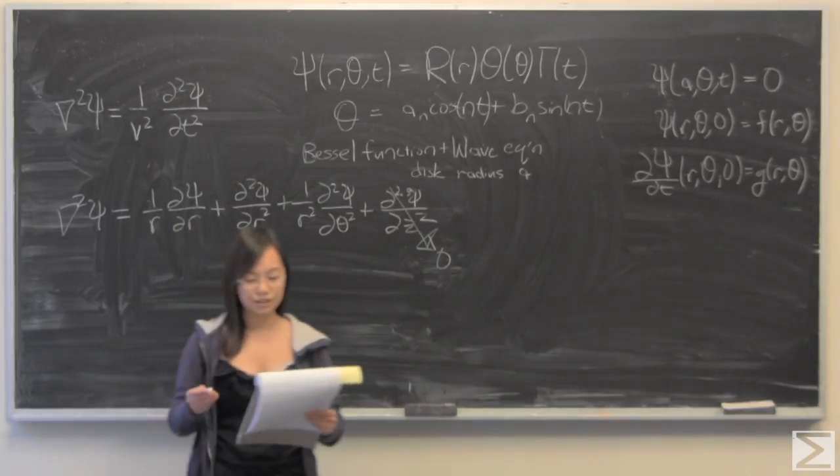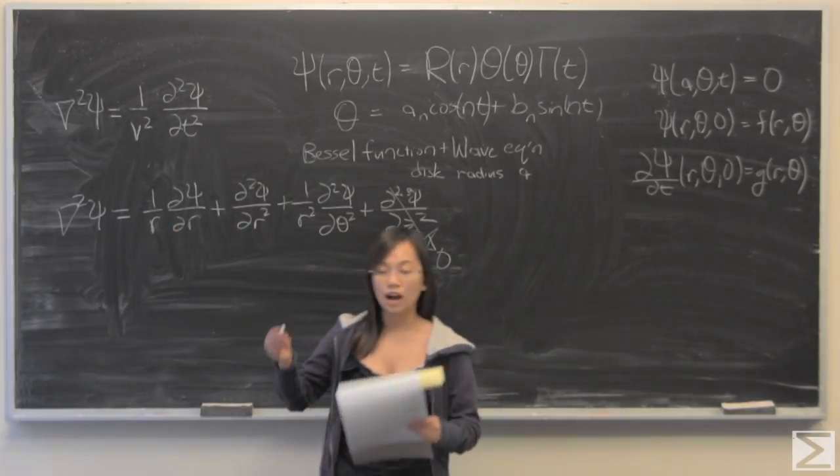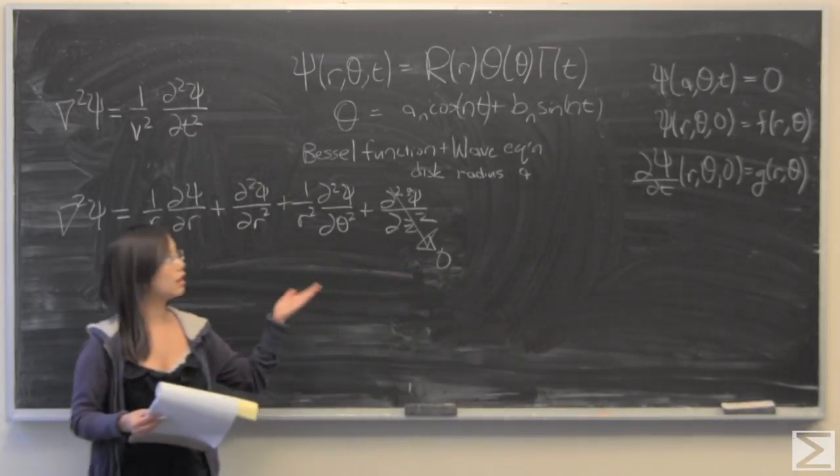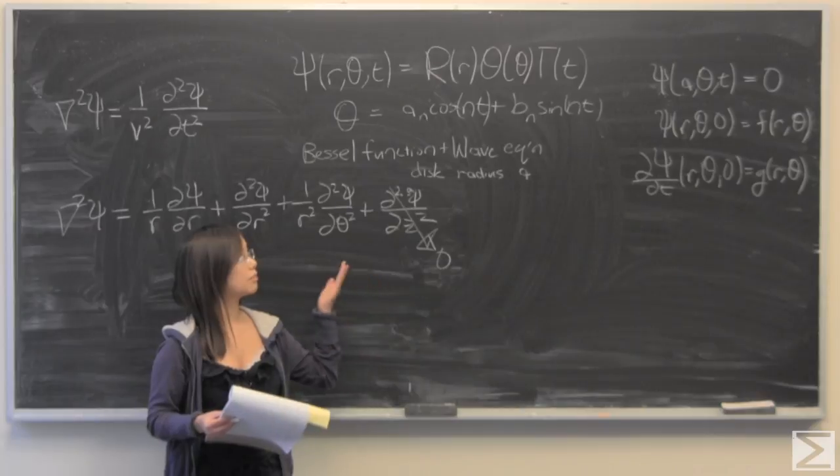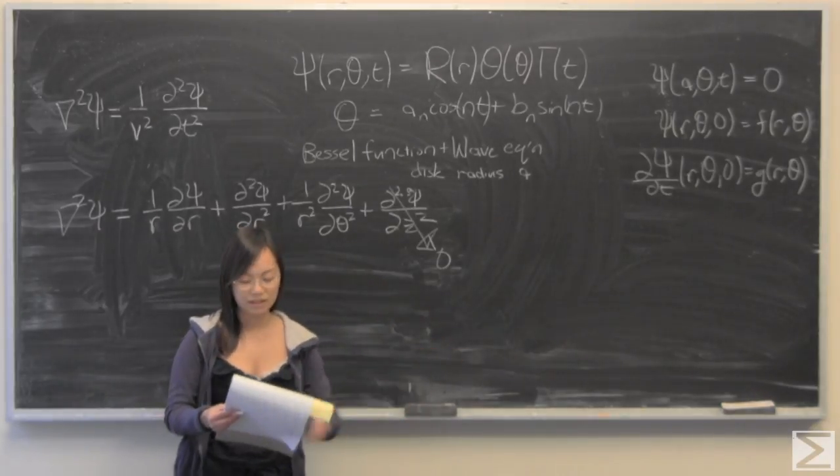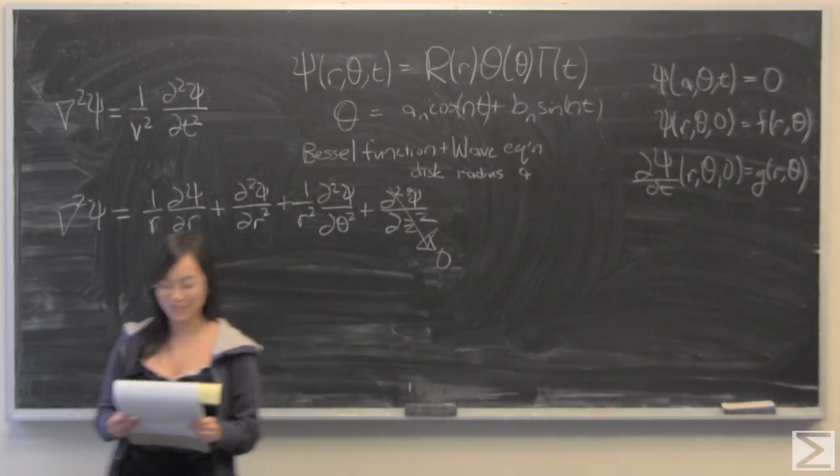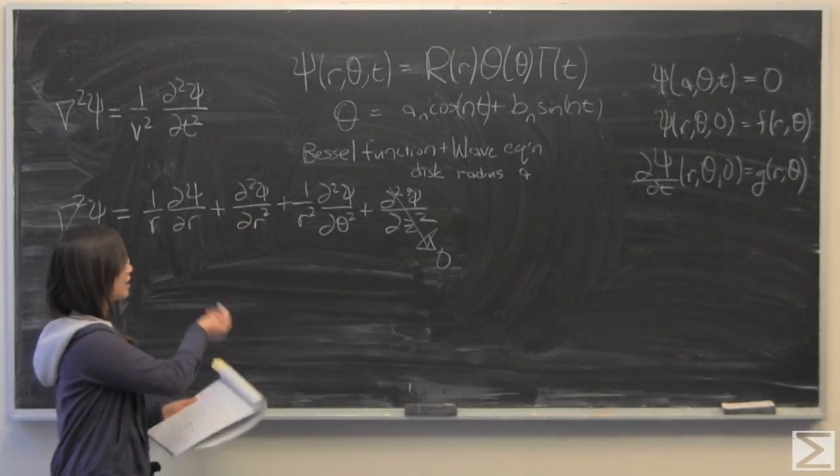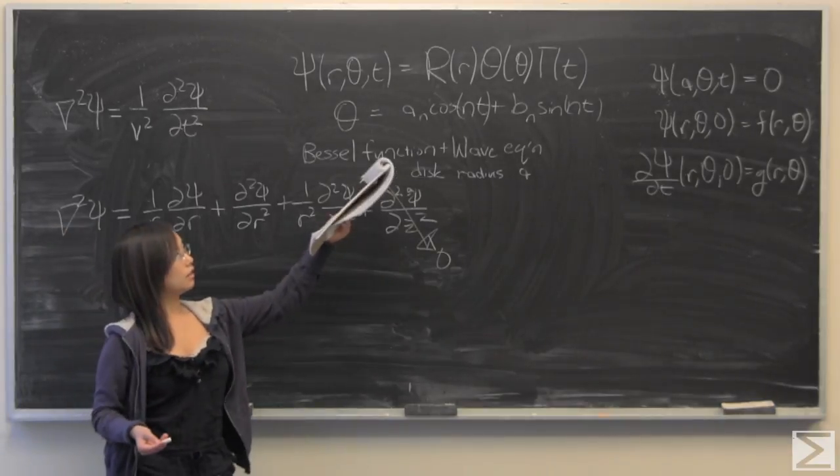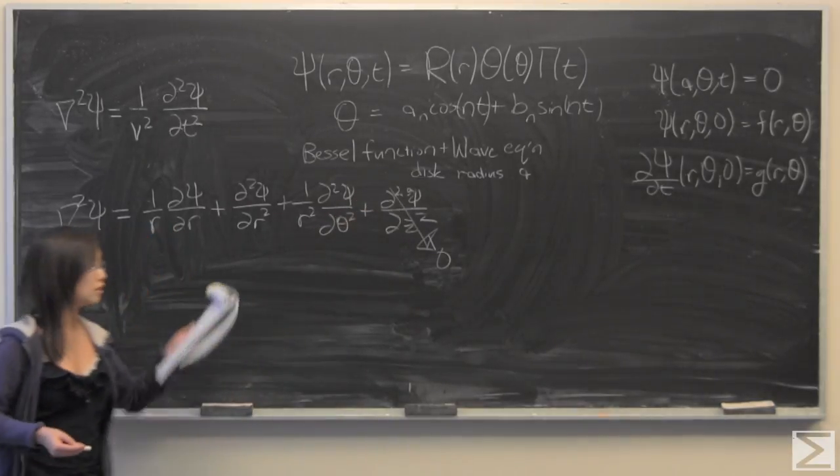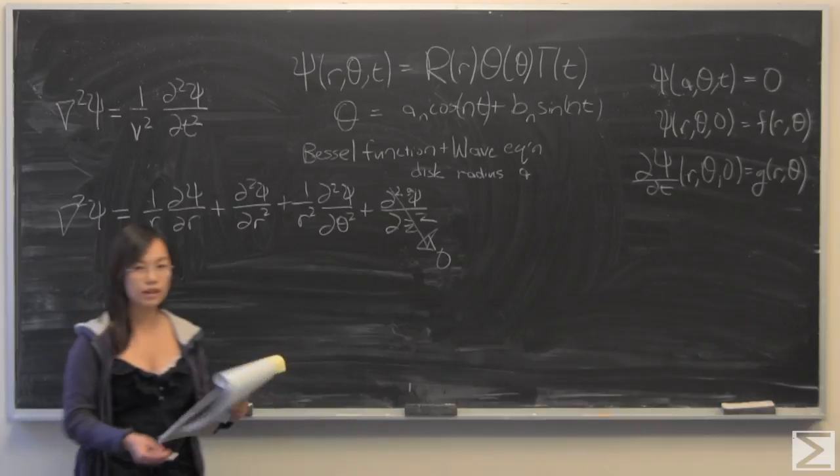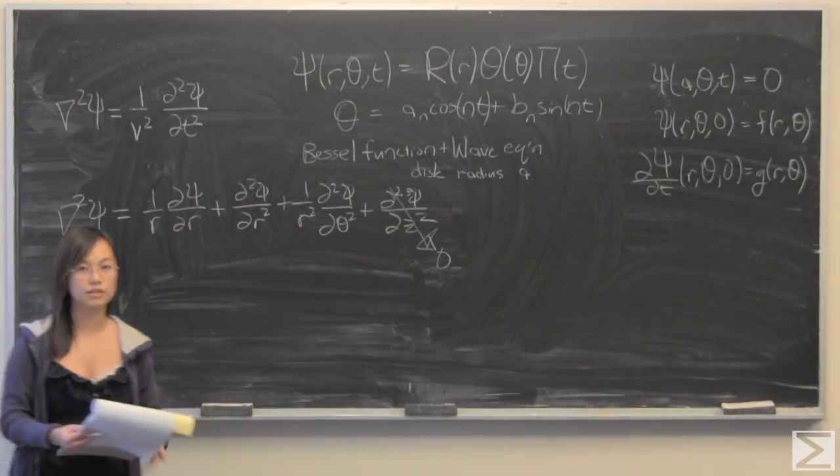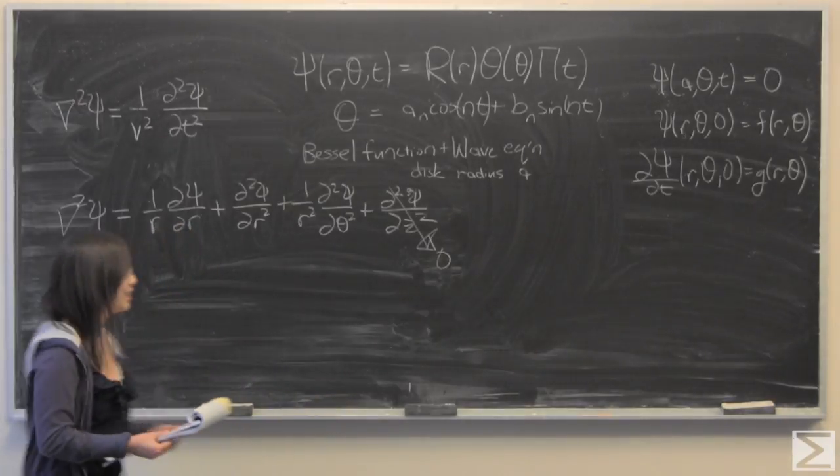From here, I'm going to start rearranging terms. I'm also going to recognize that I have called this psi something that is separable. I can make this the product of some function of r times some function of theta times some function of time. I'm going to pull out these r, theta, and t, because if you take the partial derivative and only one part of it is reliant on that particular variable, then you can pull it out just like it was a constant.